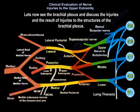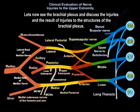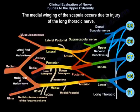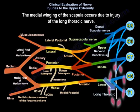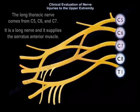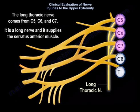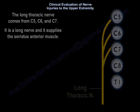Let's now see the brachial plexus and discuss the injuries and the result of injuries to its structures. We're going to start with the medial winging of the scapula. The medial winging of the scapula occurs due to injury of the long thoracic nerve. The long thoracic nerve comes from C5, C6, C7. It is a long nerve and it supplies the serratus anterior muscle.